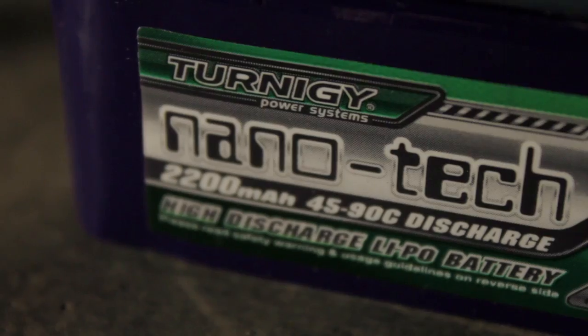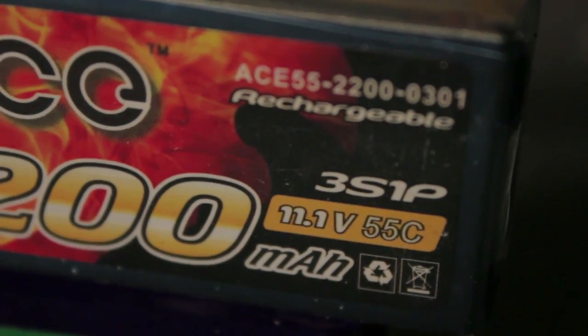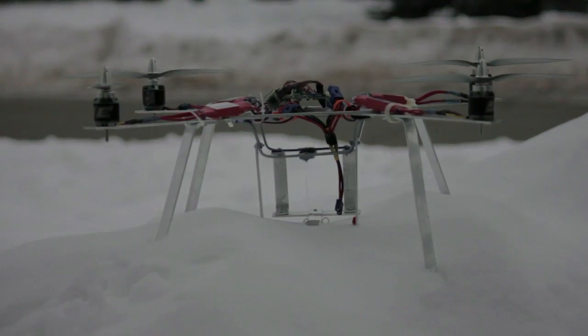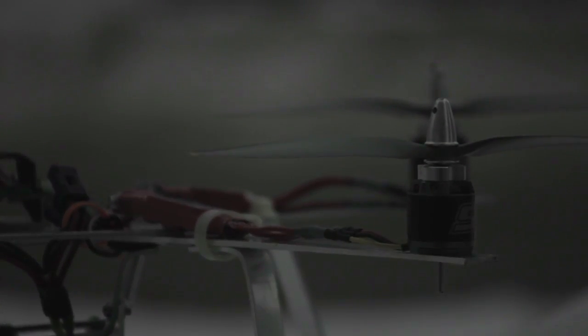This first test will be with the Nanotech 2200 milliamp hour 3 cell 45c discharge battery and the Gens Ace 2200 milliamp hour 3 cell 55c discharge battery. I'm gonna be putting each one of these batteries individually on my very large quadcopter and seeing which one has the longest flight time and which one puffs up the least.